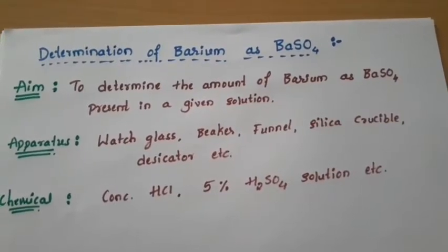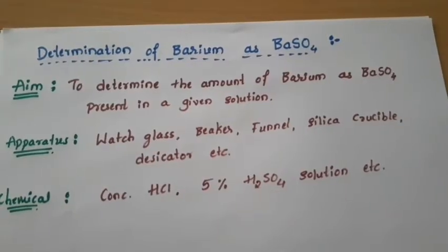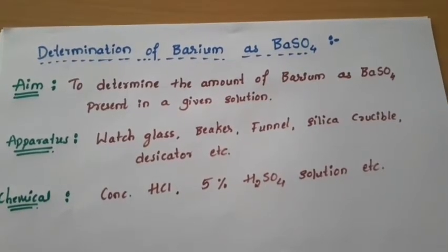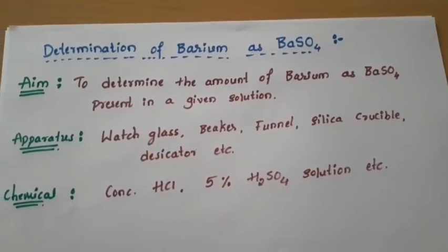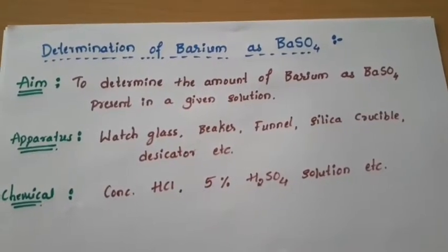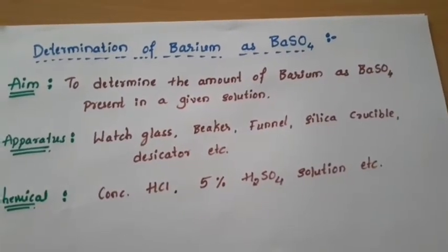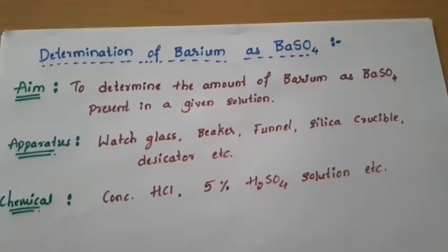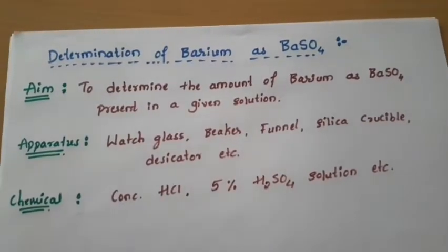Now we are discussing about the determination of barium as barium sulfate. Before going to this, I want to discuss some basic points. This is the best example for gravimetric analysis. Gravimetric analysis is the quantitative chemical analysis that involves the determination of the constituent by weighing — that is called gravimetric analysis.